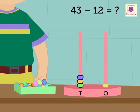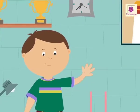Look, there are three beads remaining in the tens rod and one in the ones rod. Thus, on subtracting twelve from forty-three, we get the difference as thirty-one. Wasn't it fun learning with Tim?